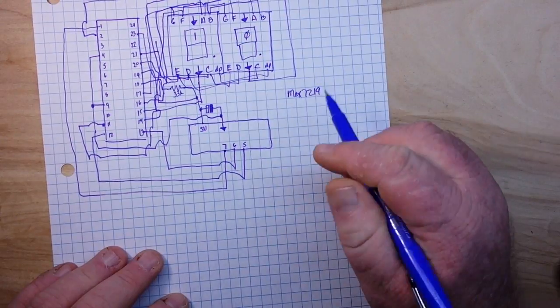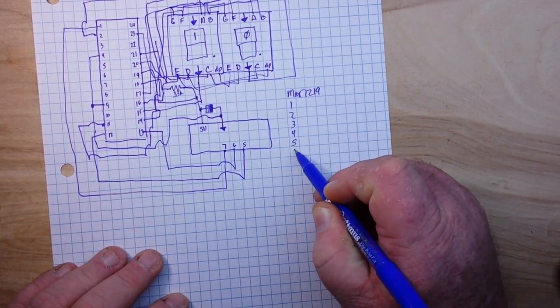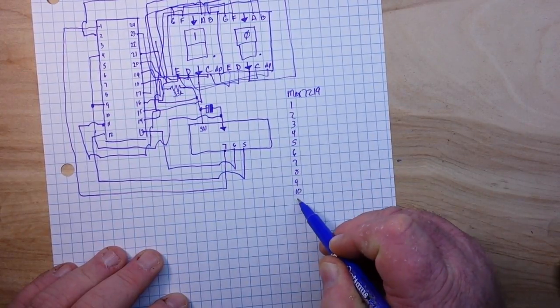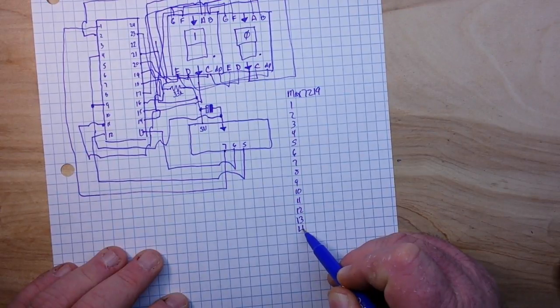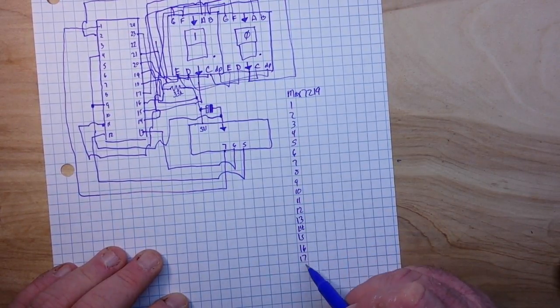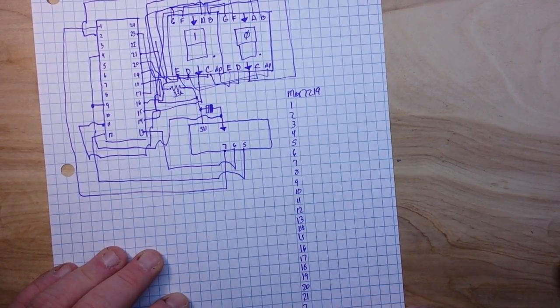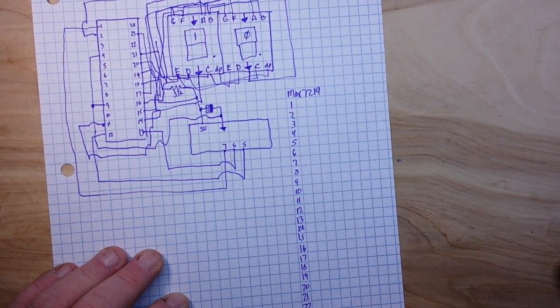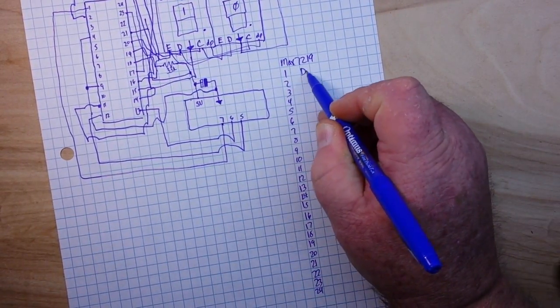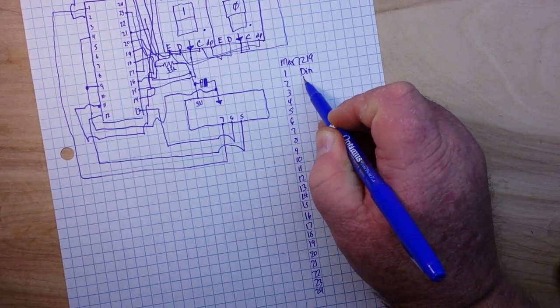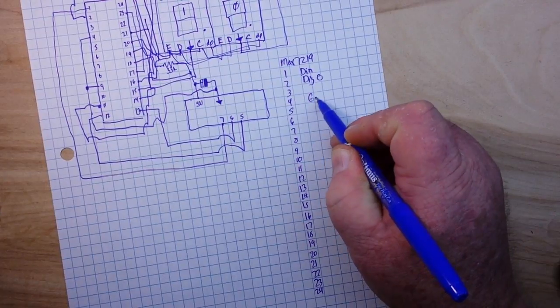Our pins 1, 2, 3, 4, 5, 6, 7, 8, 9, 10, 11, 12, 13, 14, 15, 16, 17, 18, 19, 20, 21, 22, 23, and 24. So it goes like this: 1 is DN, 2 is digit zero, 4 is ground, 9 is ground.